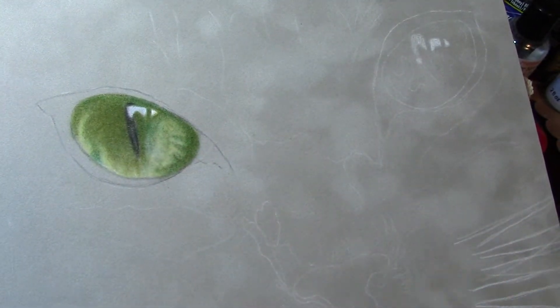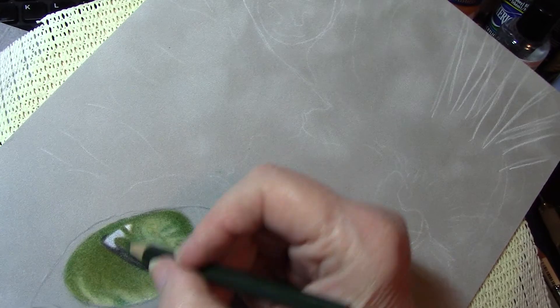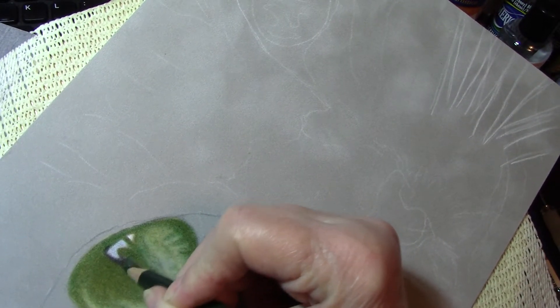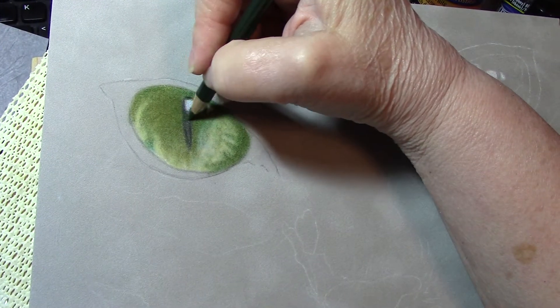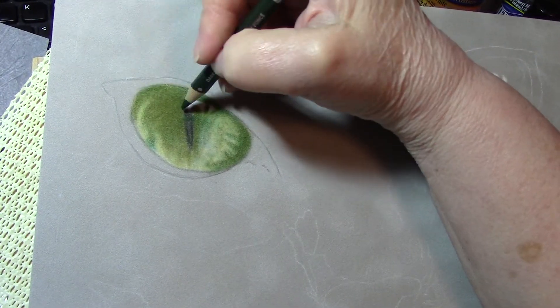He does have a bit of a green slash going through here, so I'm going to really rub hard there to bring that. And that's using the dark green.